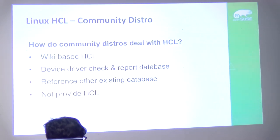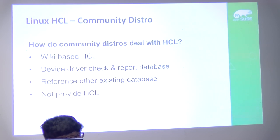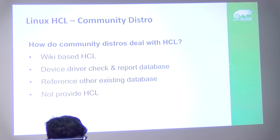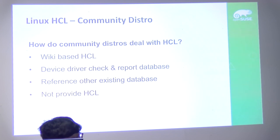Here's a quick summary of how community distros deal with HCL. There are four types: first, wiki-based HCL, which is very common and what OpenSUSE uses; second, device driver check repository databases like Debian; third, referencing other existing databases like CentOS does; and fourth, not providing an HCL at all, like elementary OS and some other distros.